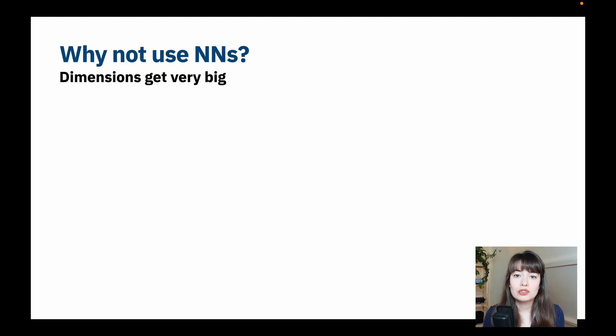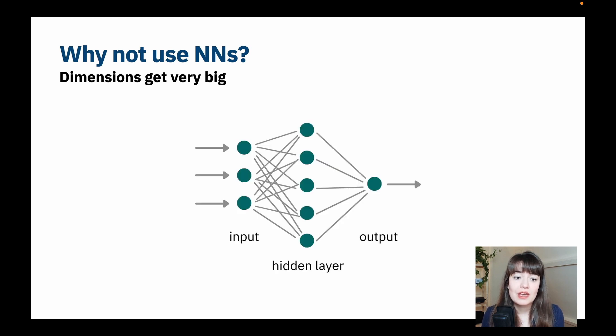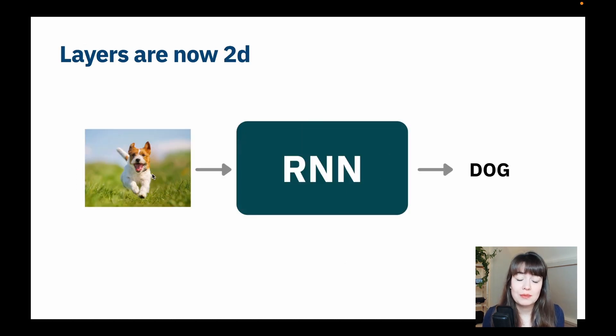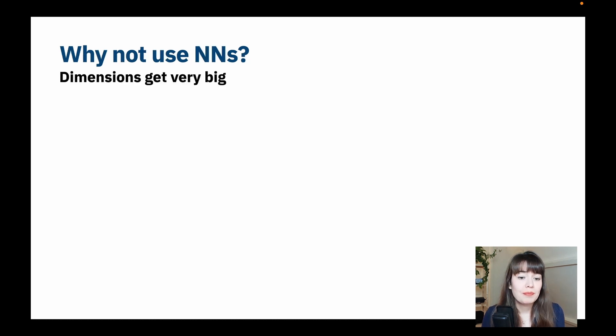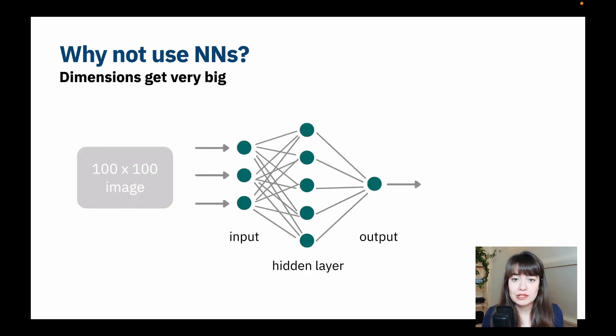So this might look just like a practicality difference, and you might say, what is the worst thing about just having a lot of input neurons in our input layer and feed-forward neural networks? Well, the problem is the dimensions get really big. So if you have a feed-forward neural network and you want to feed to it a 100 by 100 pixel image, and by the way, this image already is bigger than 100 by 100 pixels, but let's say a small 100 by 100 pixel image,